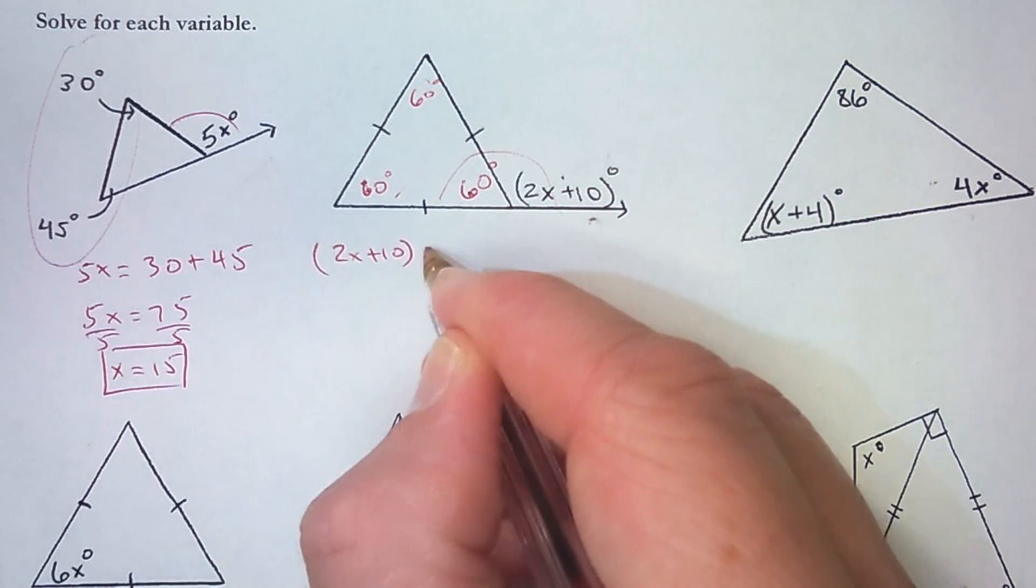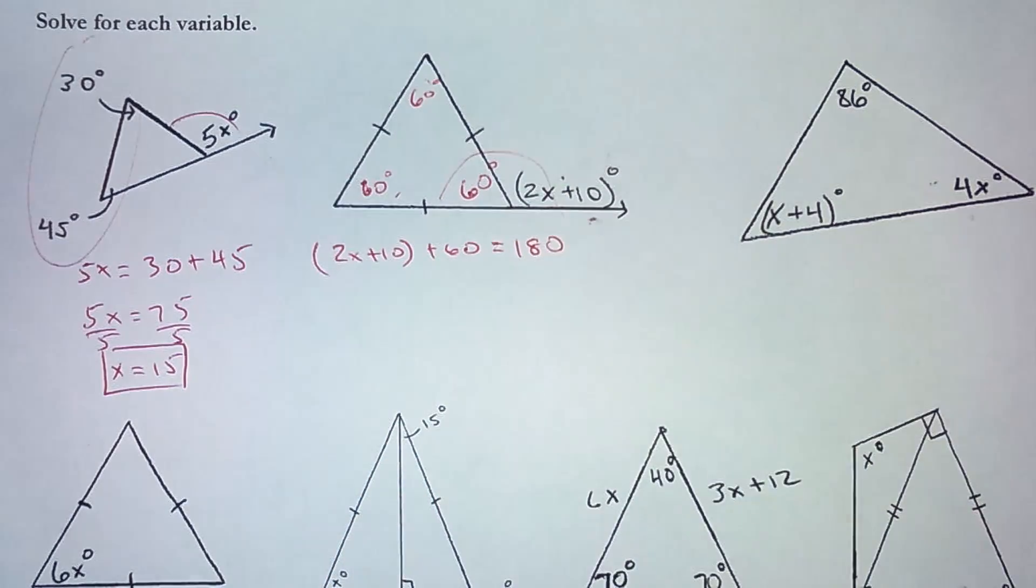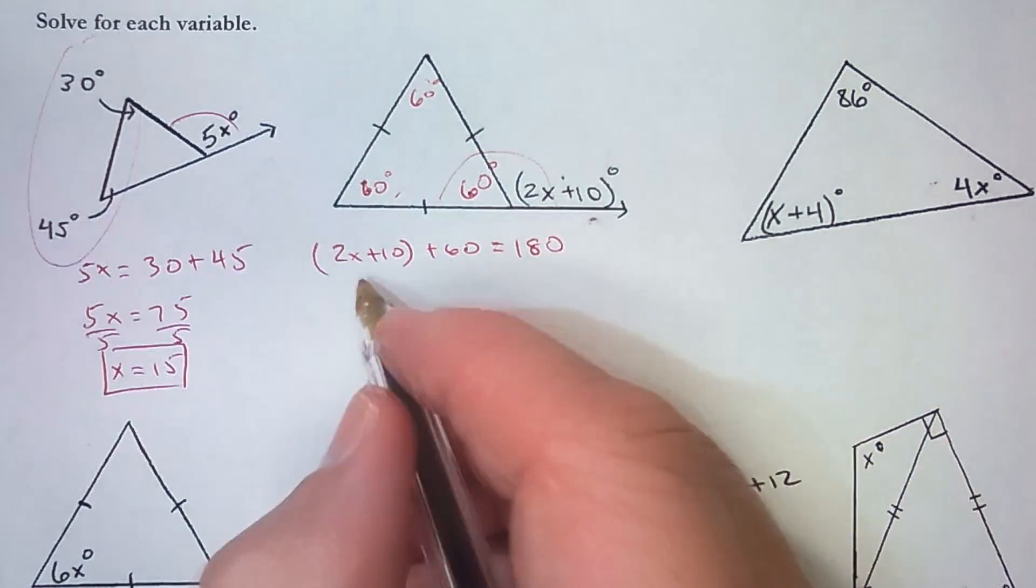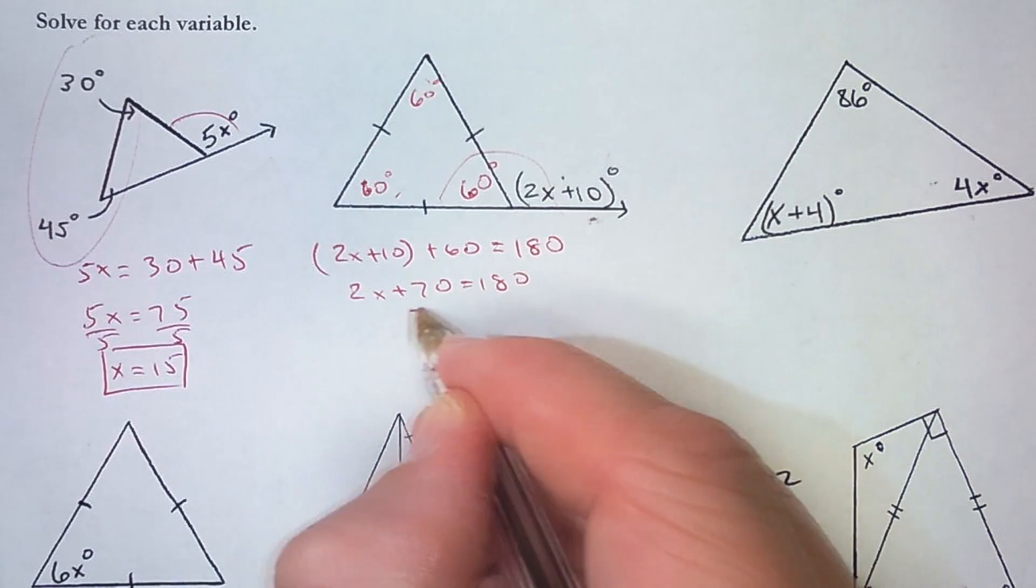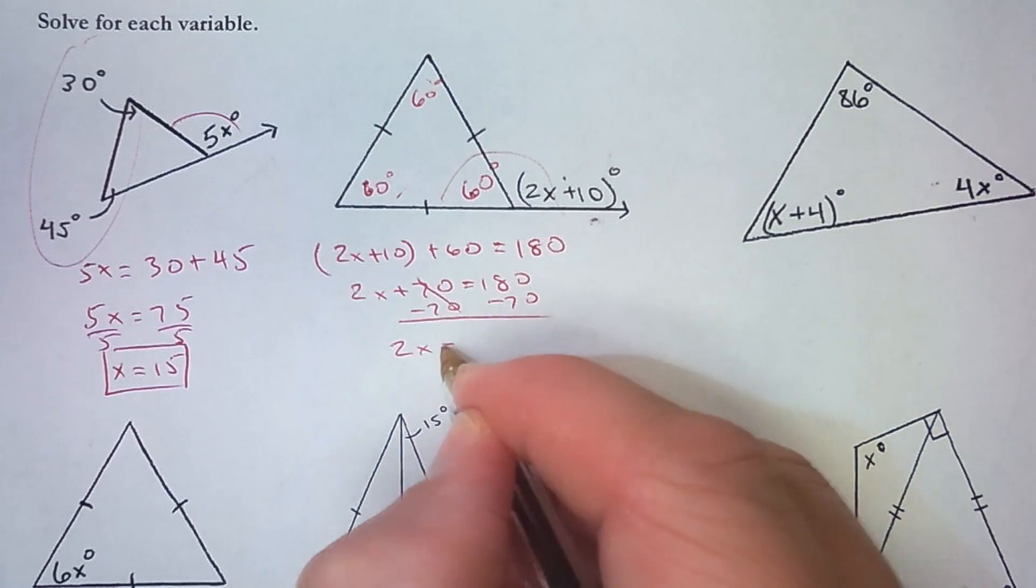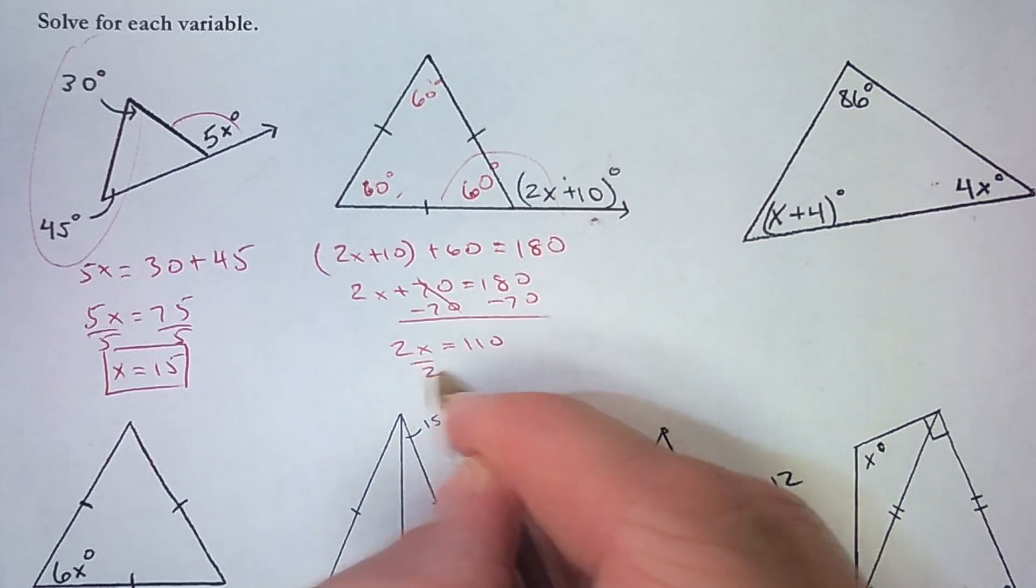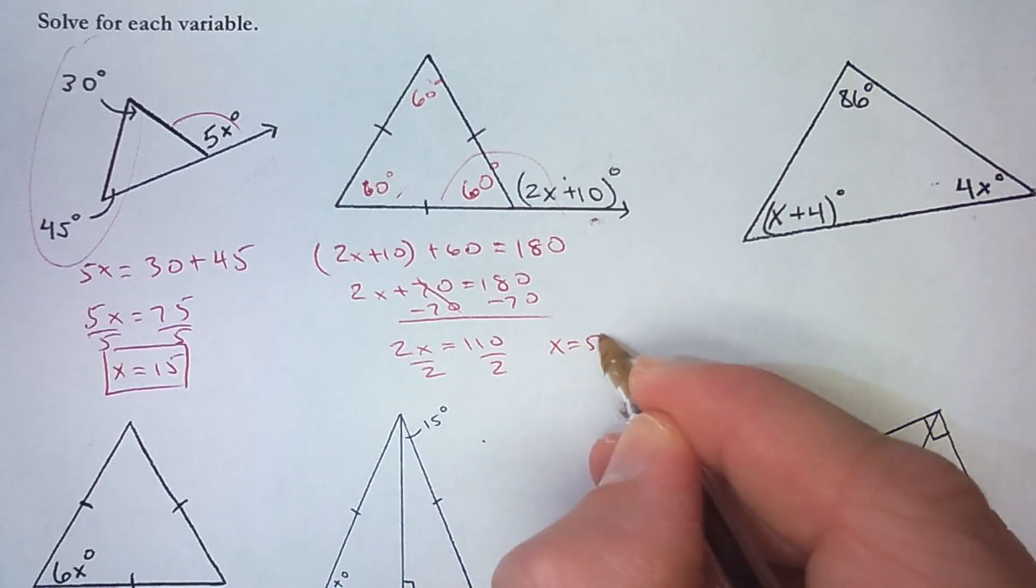2x plus 10 plus 60. There's my linear pair and a linear pair always adds up to 180. So I've got 2x plus 70 is 180 and I'll subtract 70. So 2x equals 110 and divide by 2 and 110 divided by 2 is 55.